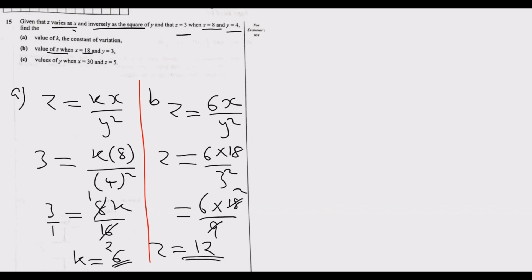What's critical here: don't multiply 6 × 18 first to get a large number. Instead, simplify by dividing small numbers first so you work more quickly. That's part b. Let's go to part c.